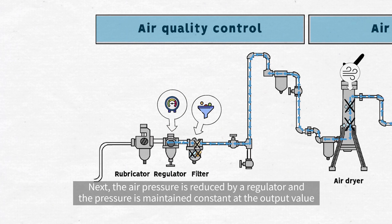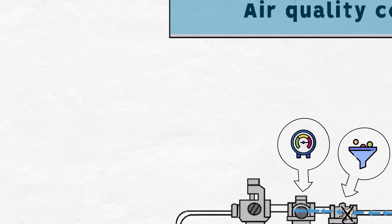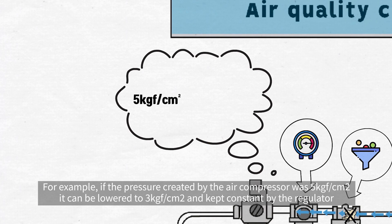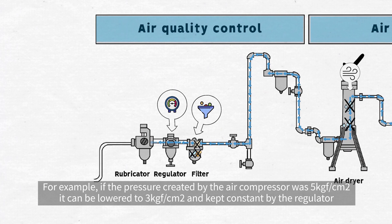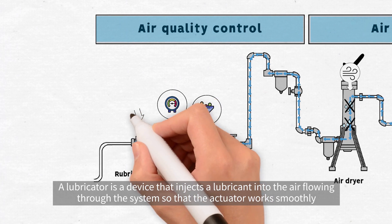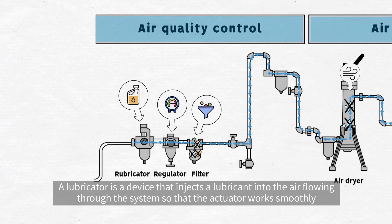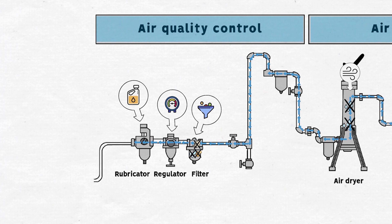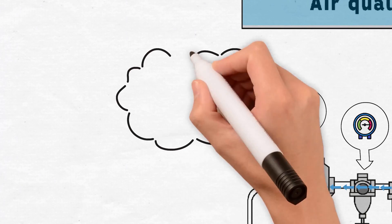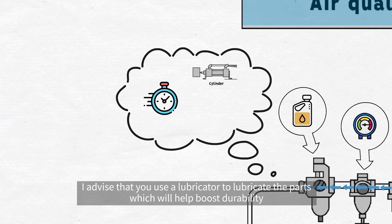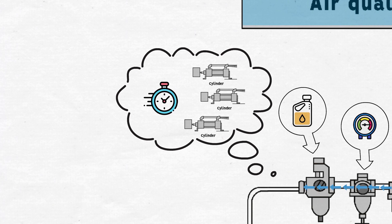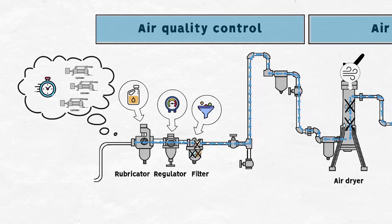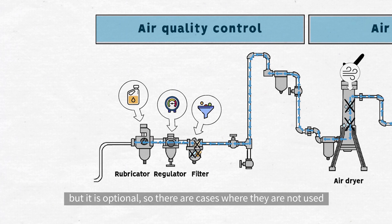Next, the air pressure is reduced by a regulator and the pressure is maintained constant at the output value. For example, if the pressure created by the air compressor was 5 kg of force per centimeter squared, it can be lowered to 3 kg of force per centimeter squared and kept constant by the regulator. A lubricator is a device that injects a lubricant into the air flowing through the system so that the actuator works smoothly. I advise that you use a lubricator to lubricate the parts, which will help boost durability, but it is optional, so there are cases where they are not used.